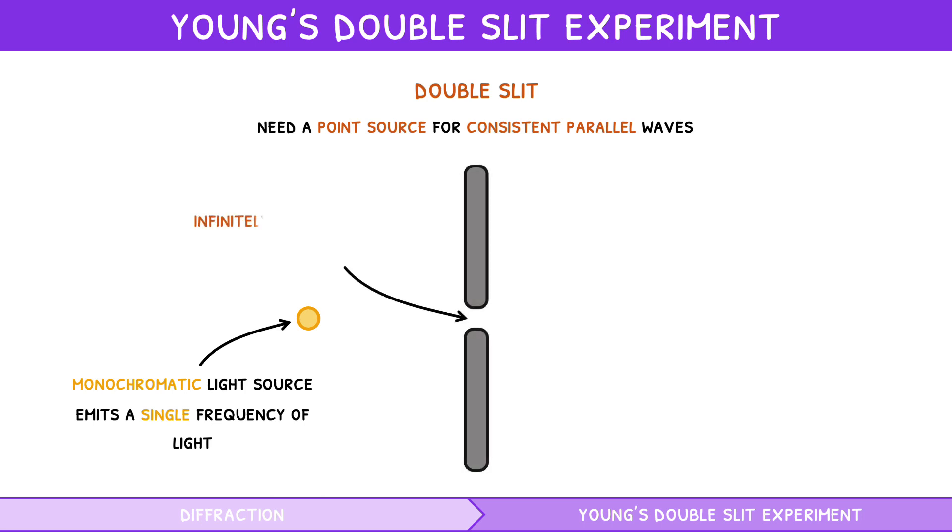An infinitely small source slit. This causes initial diffraction, thus converting the light source to a point source.